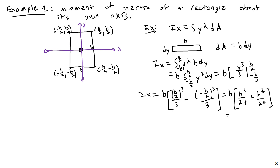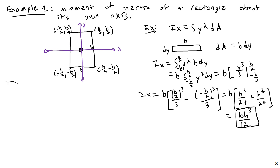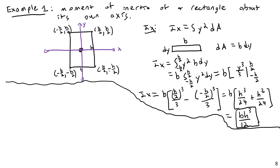Adding those together gives BH³/12. This right here is one of the most famous equations in basic civil and structural engineering — the moment of inertia of a rectangle about its centroidal axis. If you're ever doing steel design, calculating moments of inertia for custom shapes, W sections, C channels, or any number of things, this formula comes up constantly.